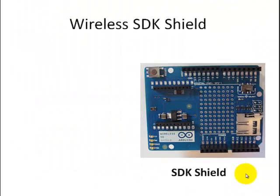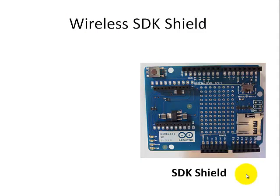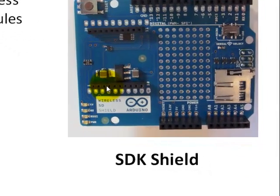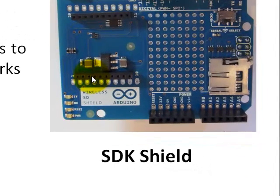The next shield is the wireless SDK shield. It supports micro SD cards and has a socket for wireless expansion modules. It primarily serves two functions: first, it works with XBee transceiver modules to create mesh networks; and second, it stores and accesses a large amount of data.